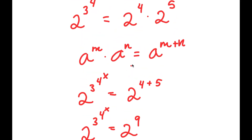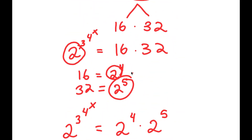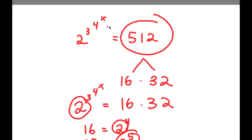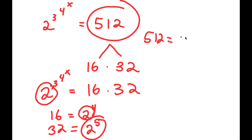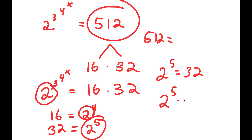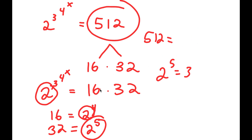Also, instead of doing all that, remember at the start we had 2 to the power of 3 to the power of 4 to the power of x equals 512. Well, 512 is 2 to the power of 5 times 2 to the power of 4, which is 2 to the power of 9. So we could have just stated at the start that 512 equals 2 to the power of 9, but some people don't know that 2 to the power of 9 is equal to 512, so that's why we had to do all of that.